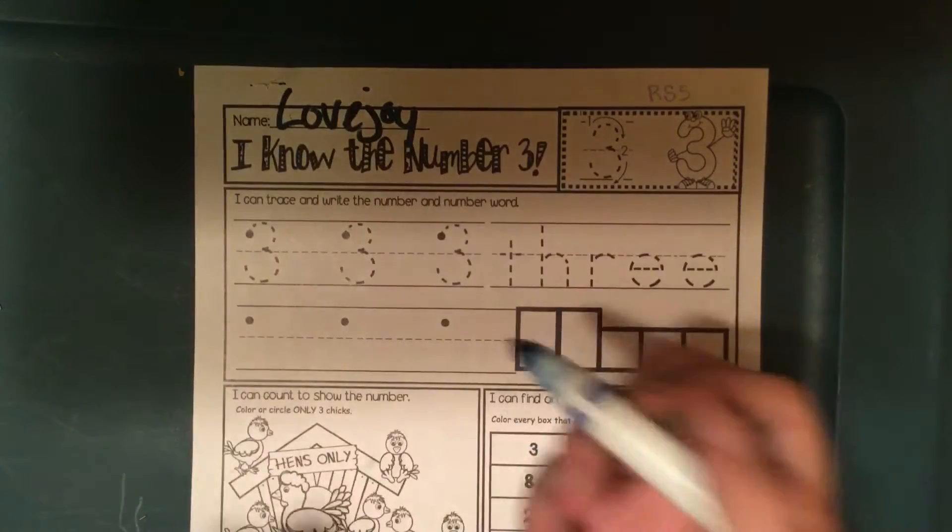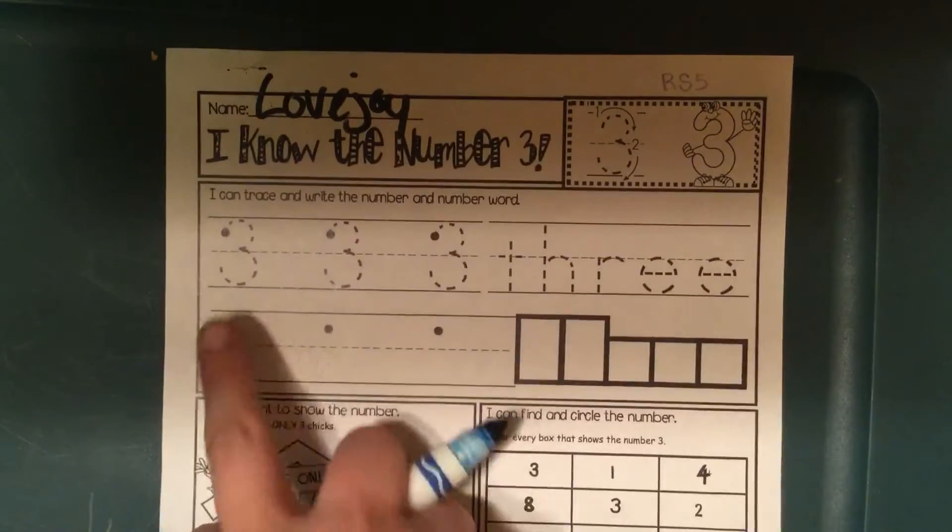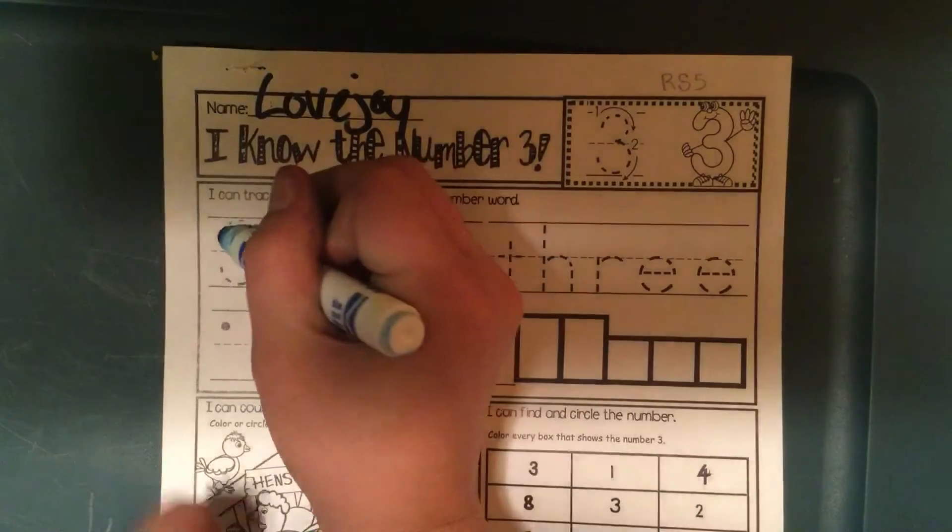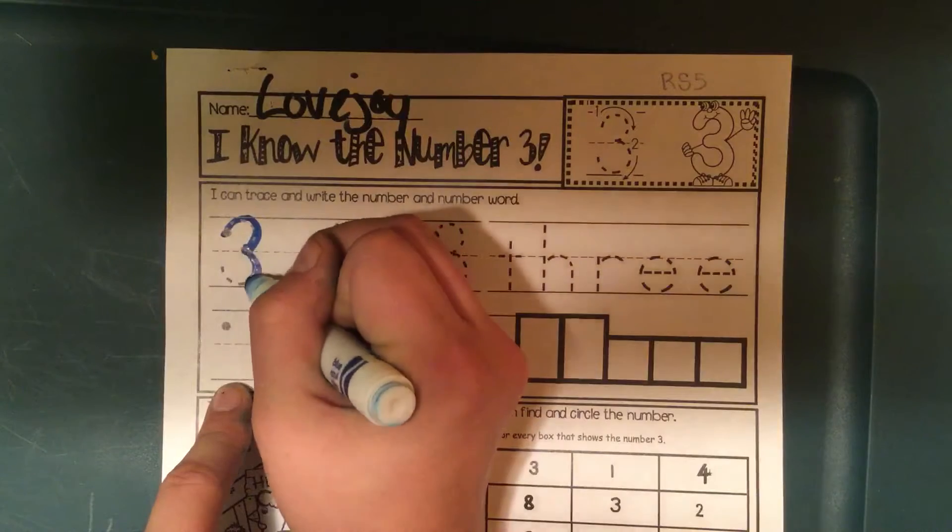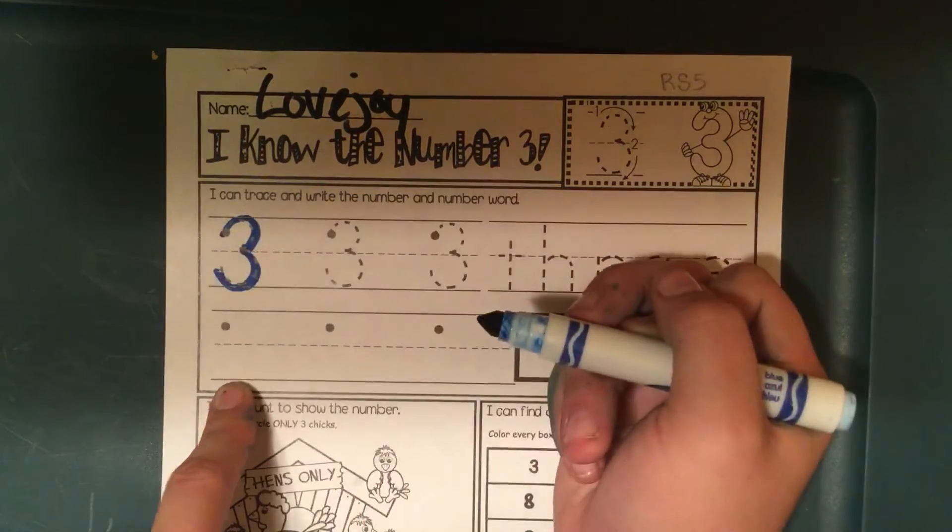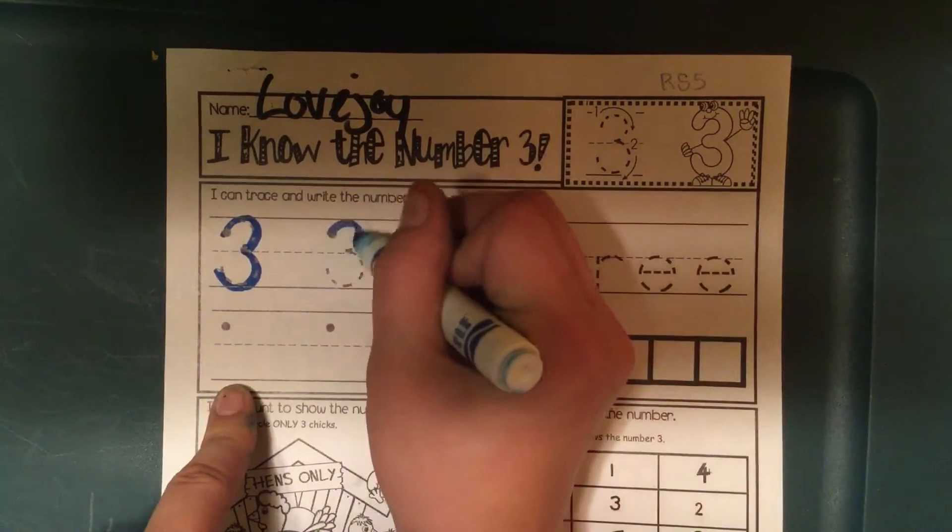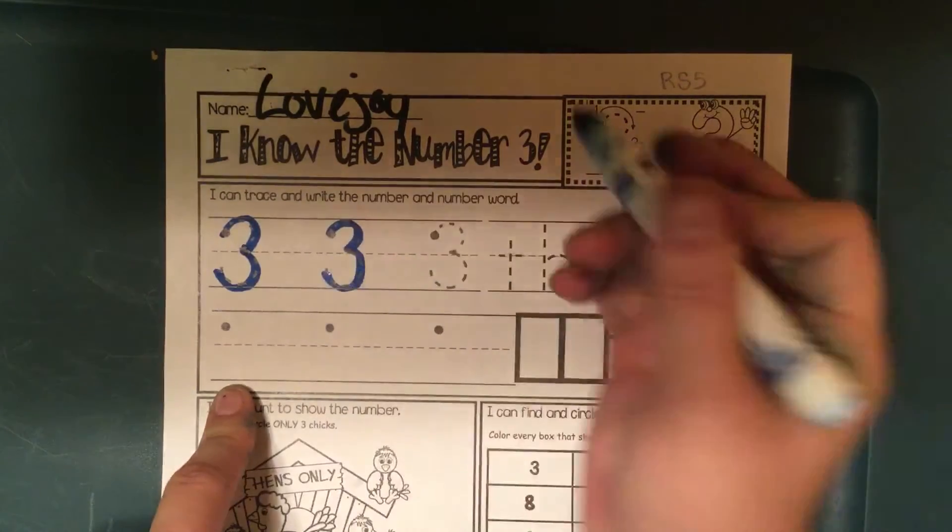So, the first thing I'm going to do is practice writing the numeral. I'm going to start at the dot, go up to the top, touch the middle line like that, go down, touch the bottom line, and come back up. Go around a tree, around a tree. That's how I make a 3.